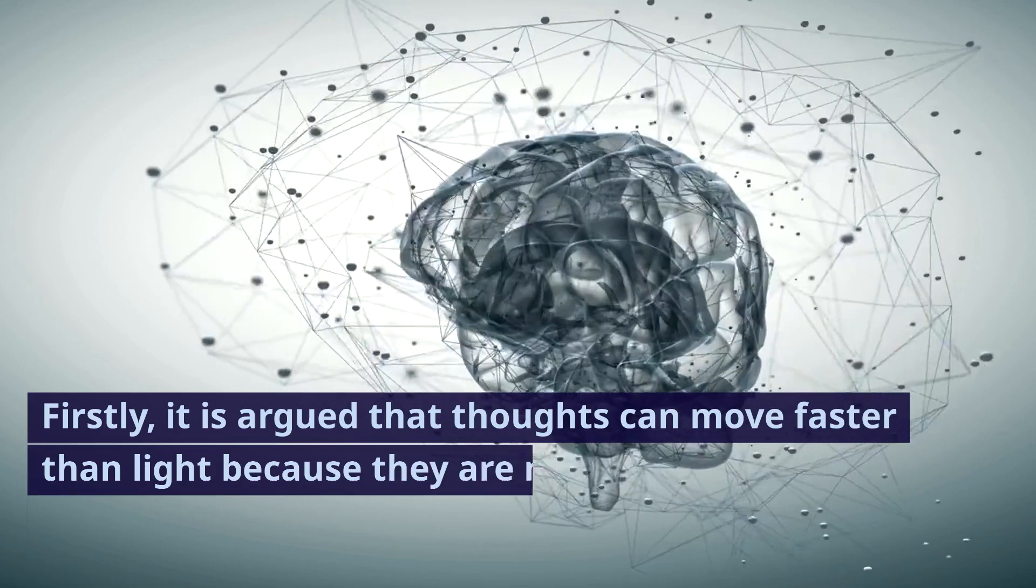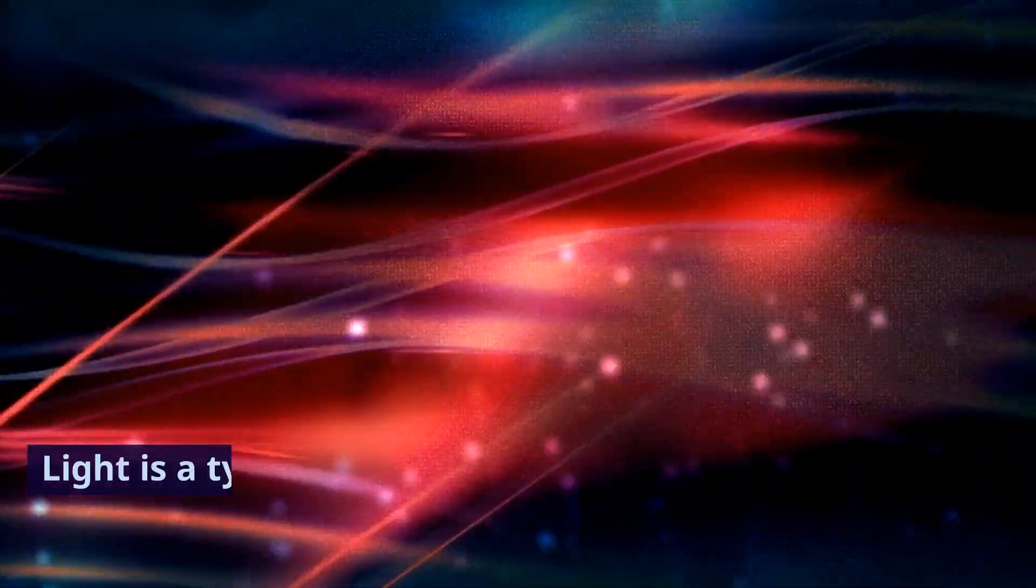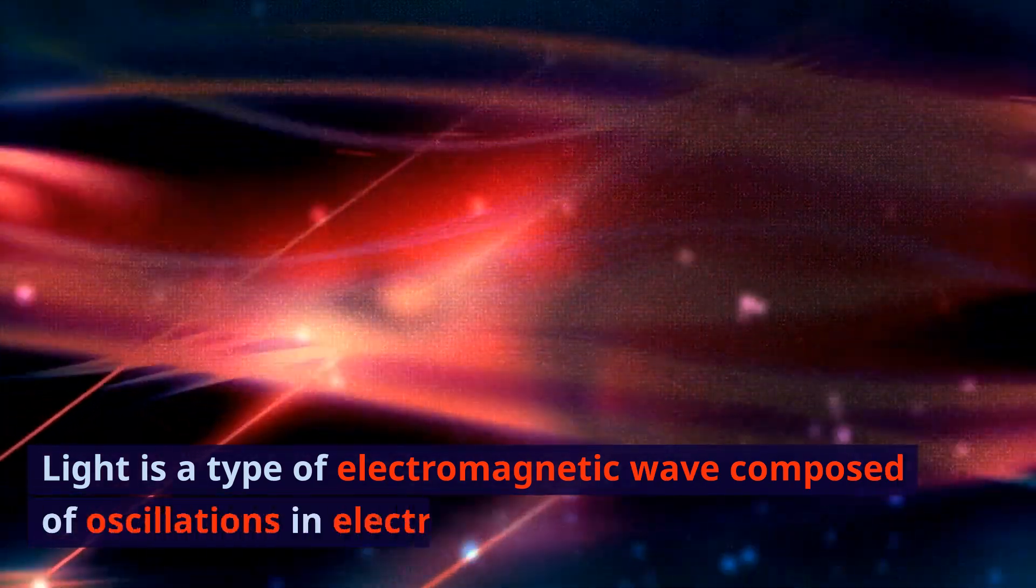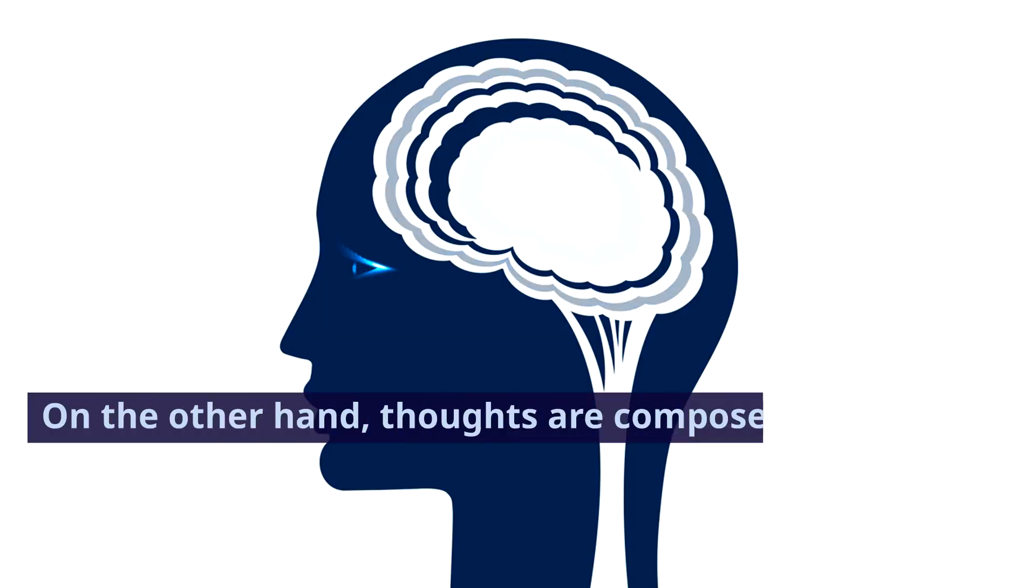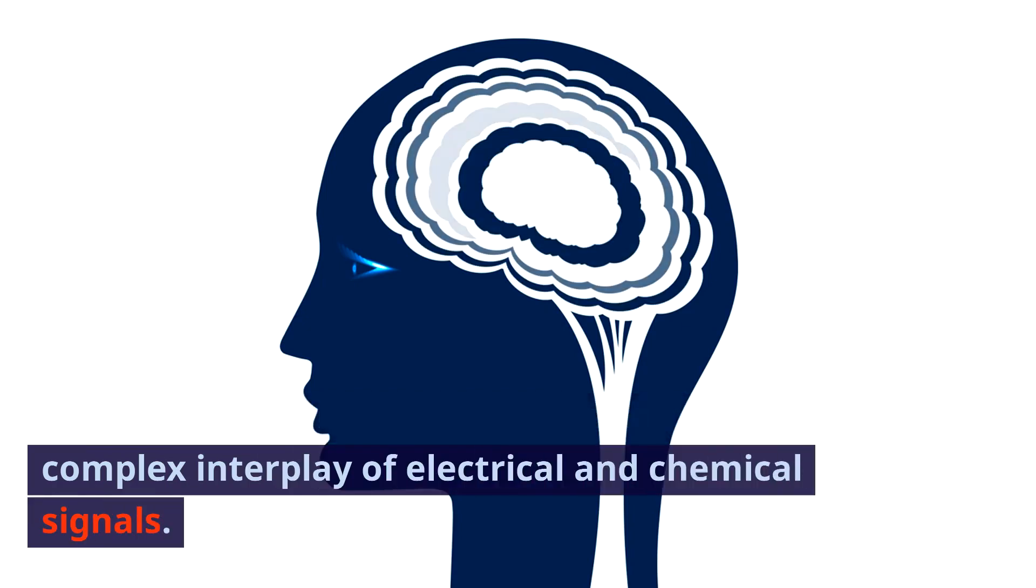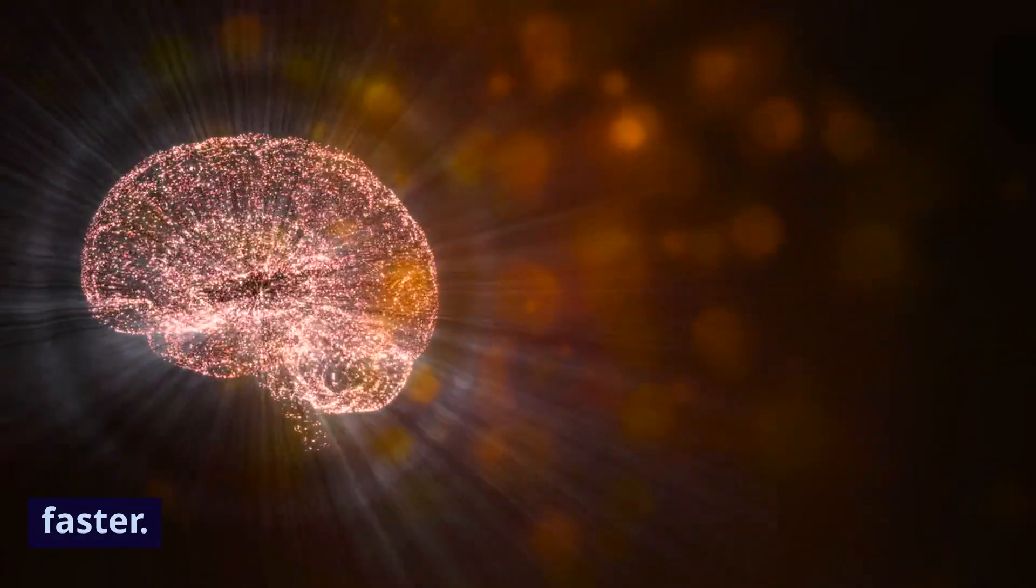Firstly, it is argued that thoughts can move faster than light because they are not material but rather energetic in nature. Light is a type of electromagnetic wave composed of oscillations in electric and magnetic fields. On the other hand, thoughts are composed of a complex interplay of electrical and chemical signals. Since thoughts do not rely on a physical medium like light does, it is suggested that they can travel faster.